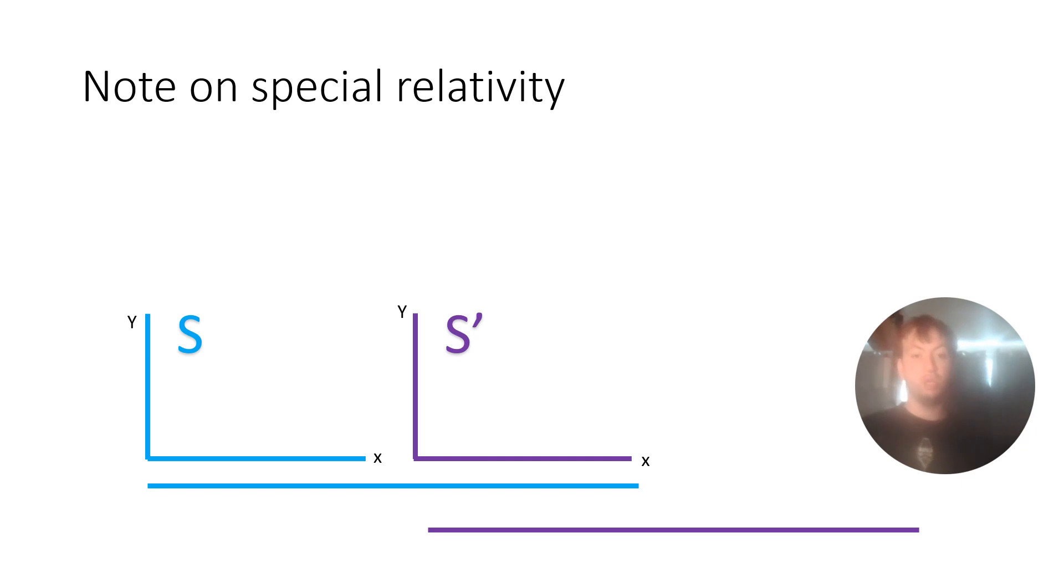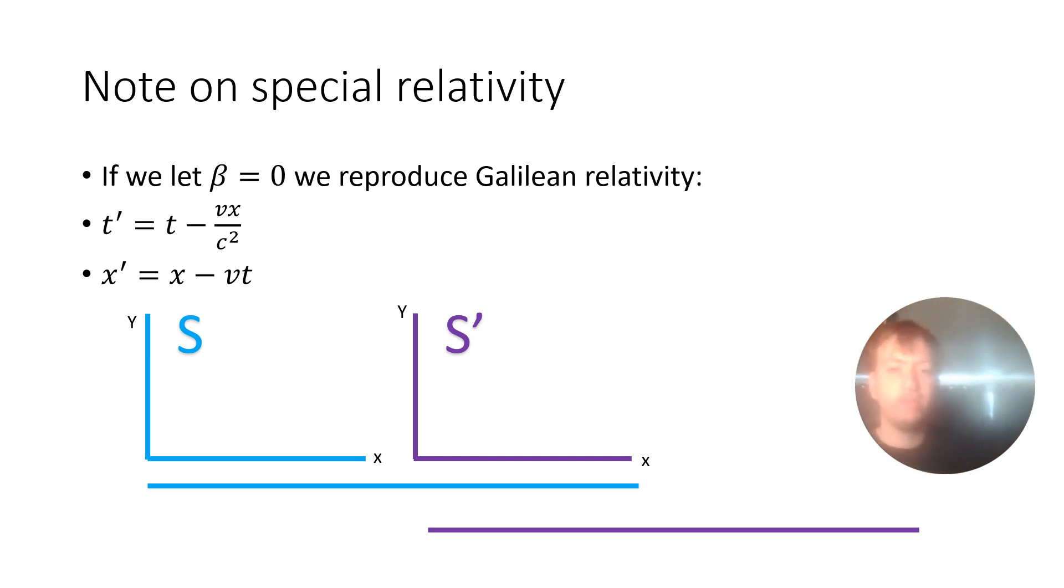Hello, so now we're going to look at Galilean relativity. Now, Galilean relativity, as I said, we get when we make beta approximately zero, and we end up with these equations. Now, before I said that these equations represent Galilean relativity, and that was somewhat of the truth. It's true that the bottom equation for x prime and x does represent Galilean relativity.